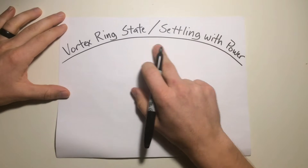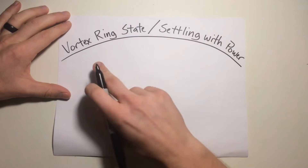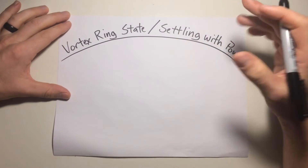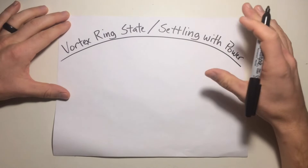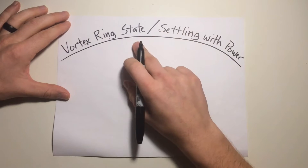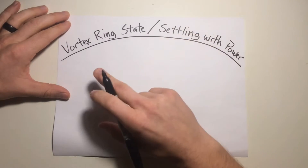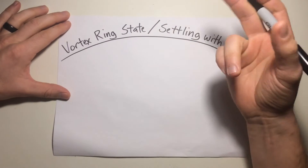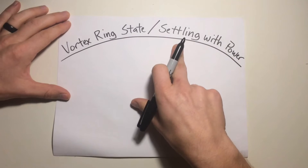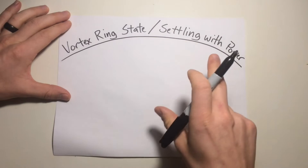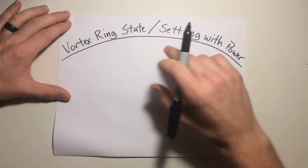Today we're talking about vortex ring state and settling with power. A lot of references will address these both as one and the same, but they're actually two separate terms that are very closely related. Vortex ring state is a series of vortices developing in a rotor system — multiple vortices in addition to just the wingtip vortices. Settling with power is a condition where the helicopter tends to settle in its own downwash as a result of a vortex ring state.